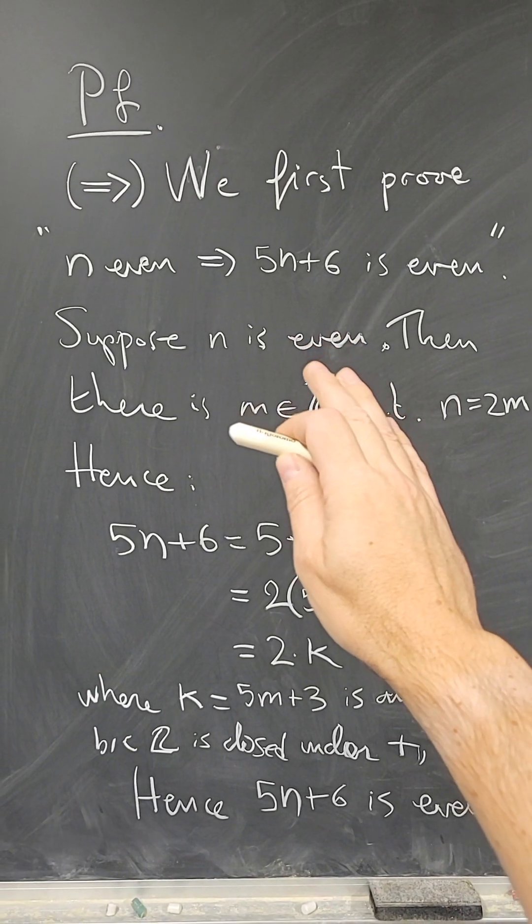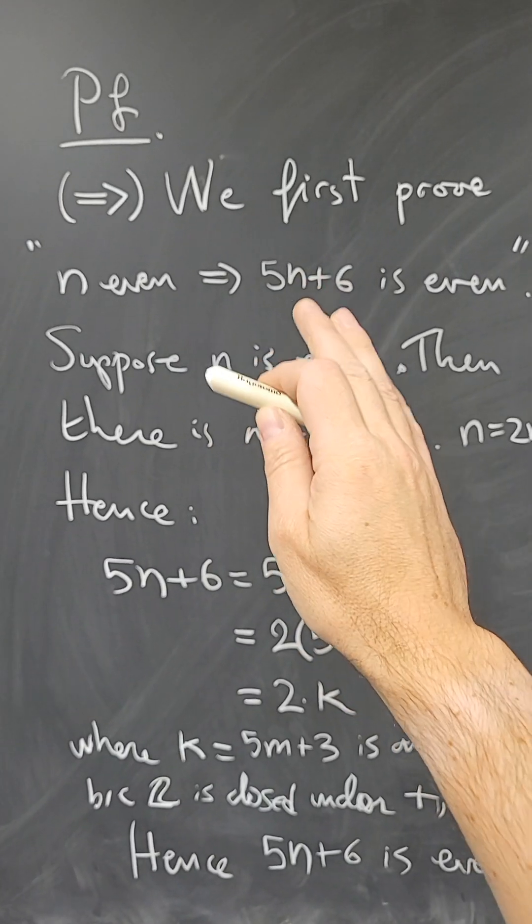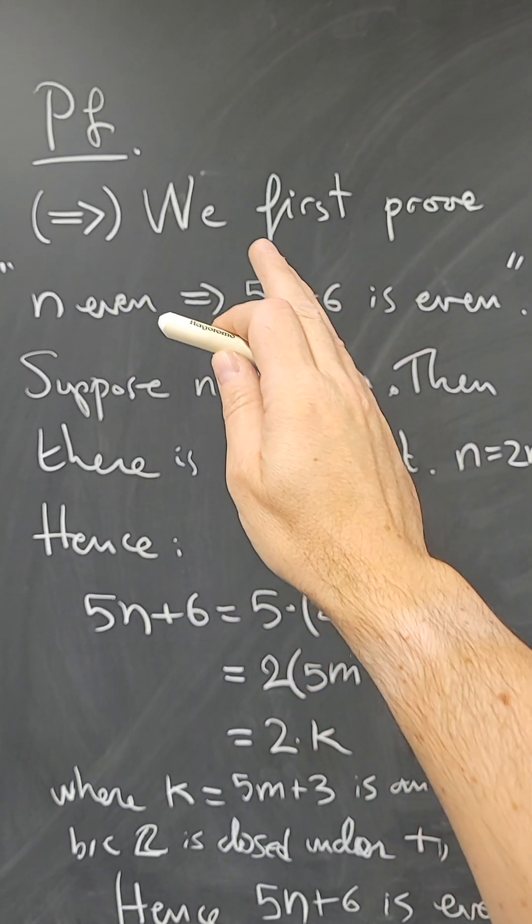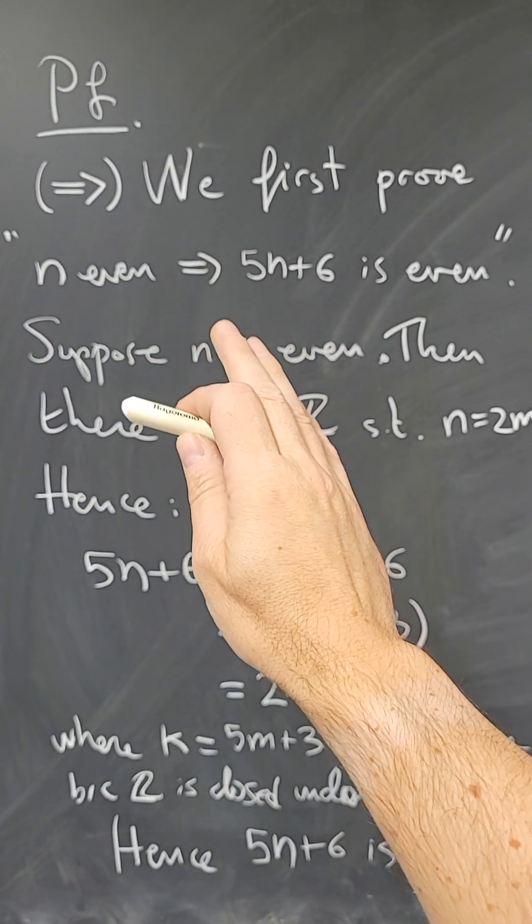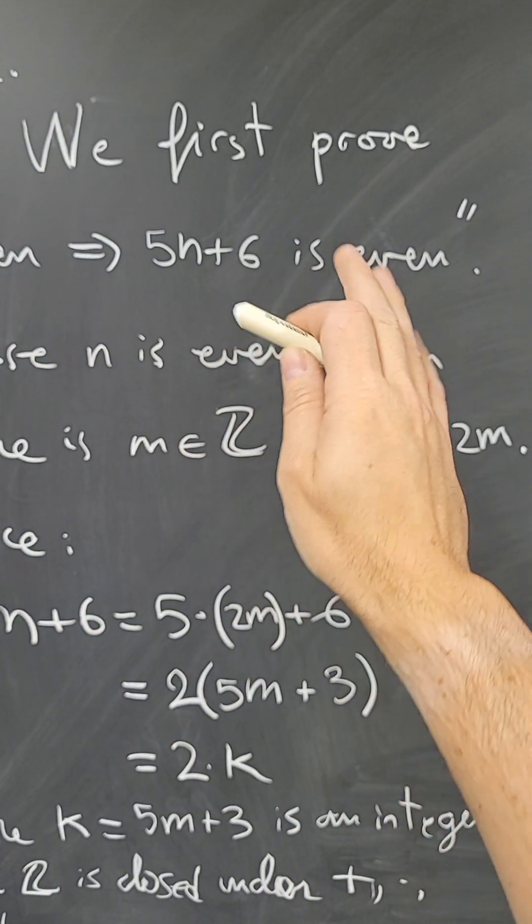So the very first thing we need to do in a proof of an if and only if statement is to state very clearly what direction we're proving first. So in this case, we're going to prove the left to right direction. So we are going to first prove that if n is even, then 5n plus 6 is even.